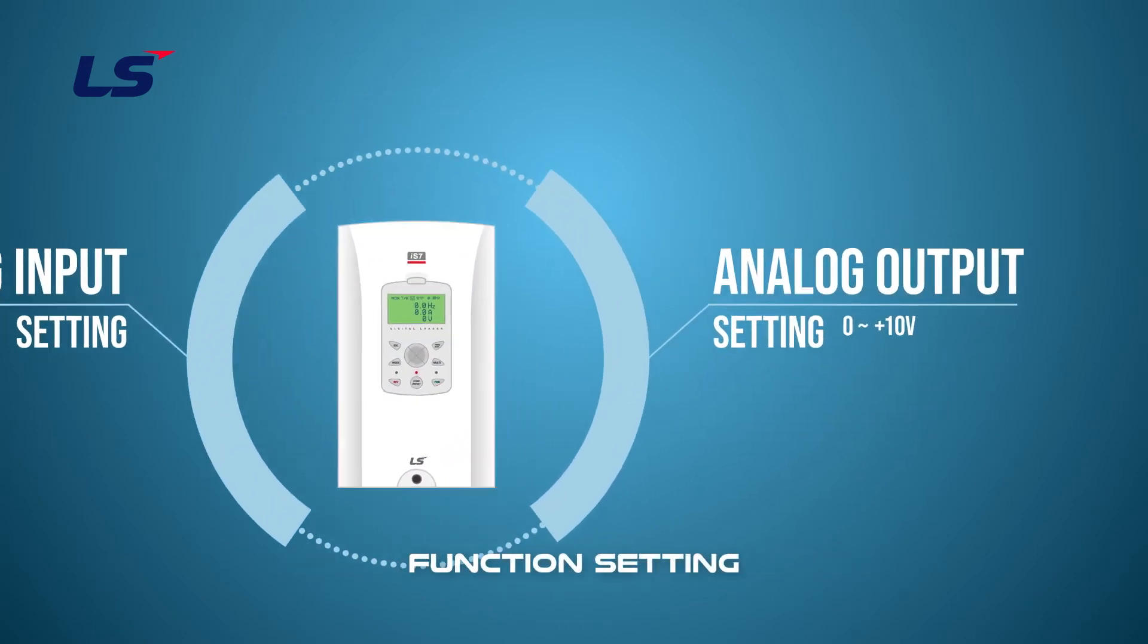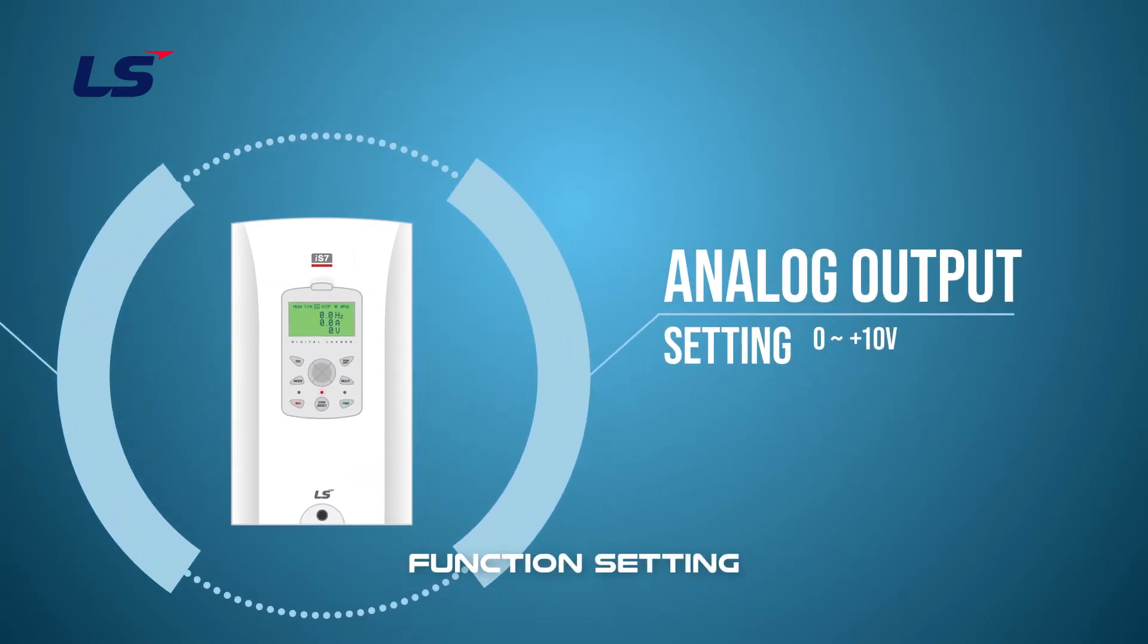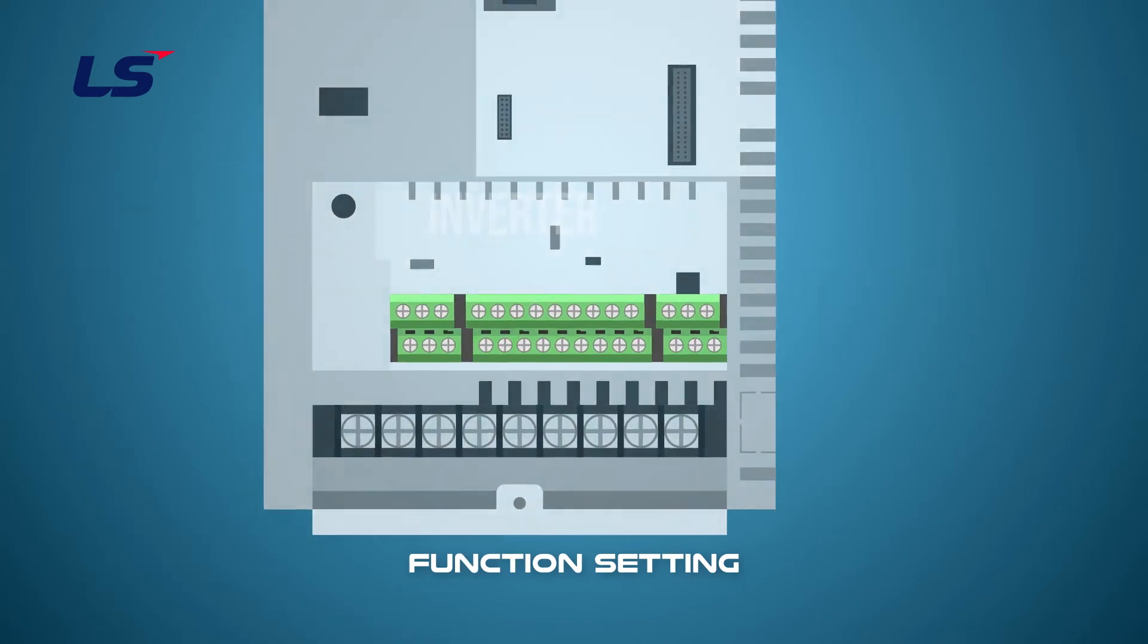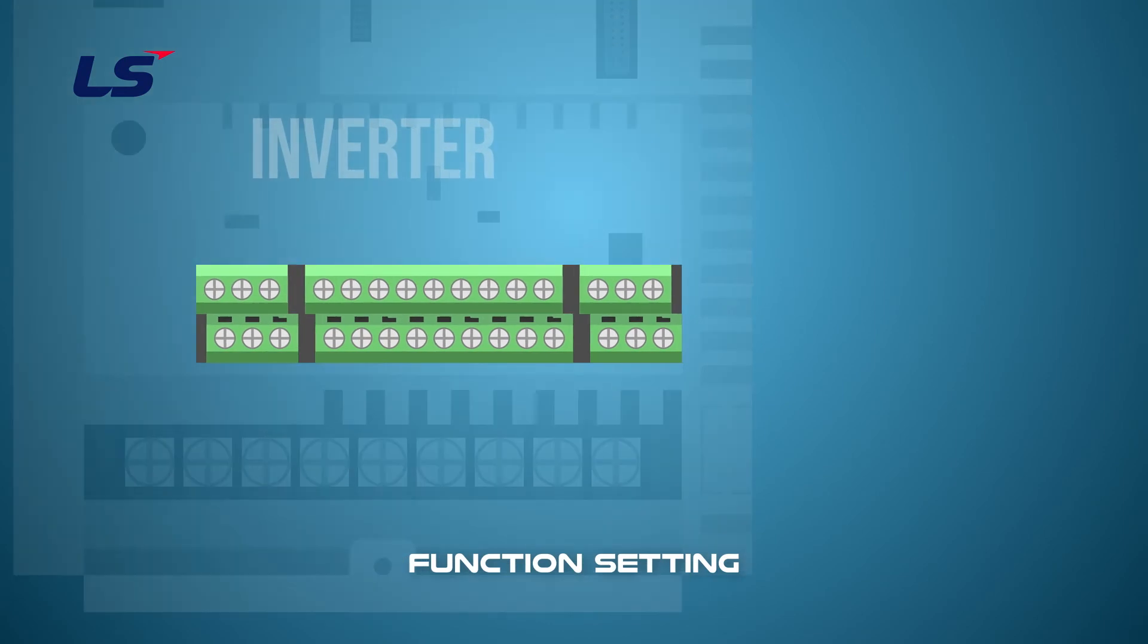Next, we will learn about setting up analog outputs between 0 and 10 volts. Analog output terminals are AO1, AO2, and 5G terminals.